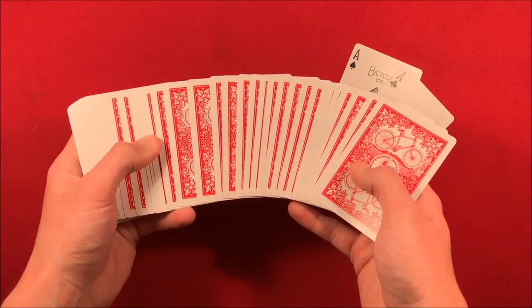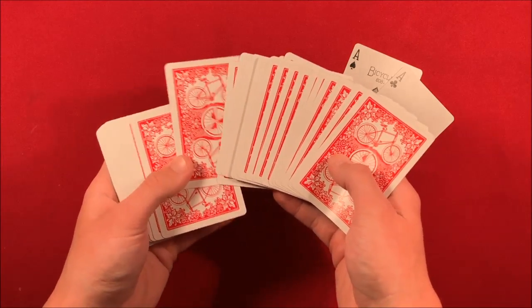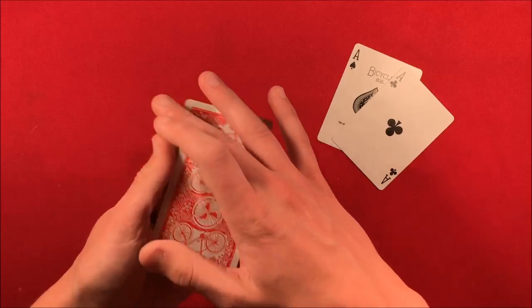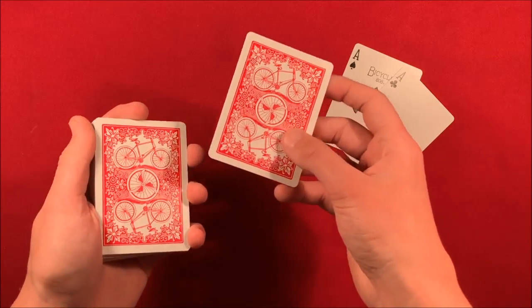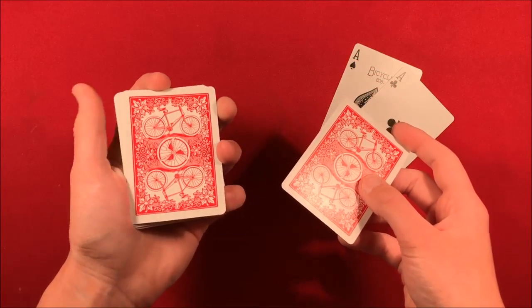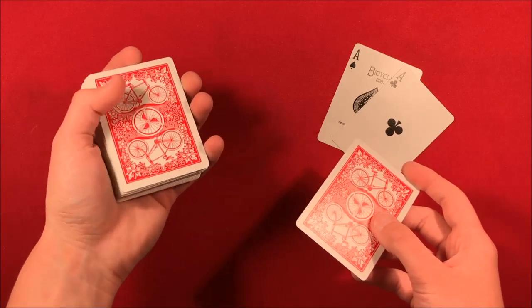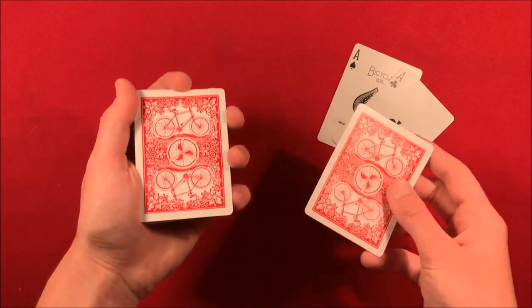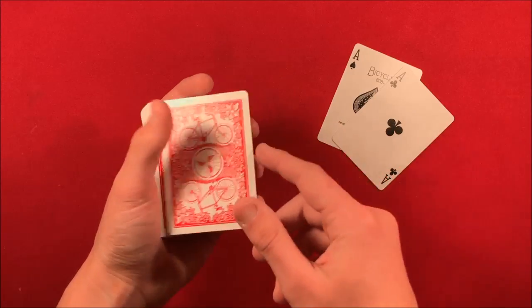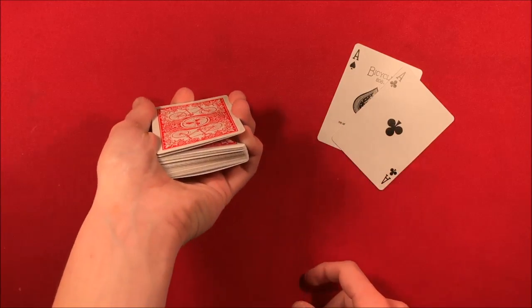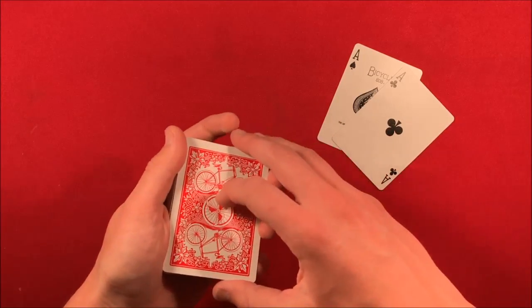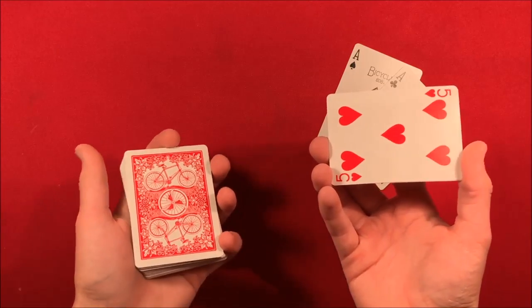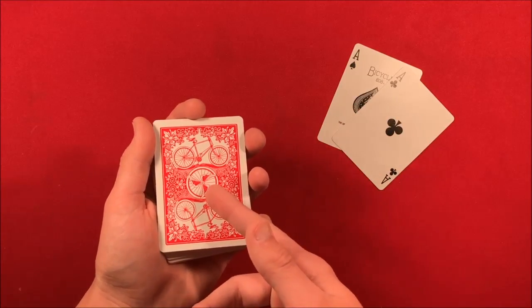From here what you can do is you give the illusion that the spectator is picking a random card which they are, but what you do is when you pull the card from the middle you're gonna push over the top card and catch a pinky break. So you're just pushing that over with your thumb, pulling it back, catching a pinky break, dropping this card on top. Now you have two cards on the break. You say okay so it looks like you've chosen the five of hearts.